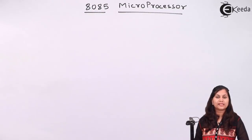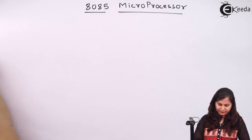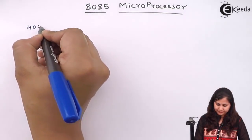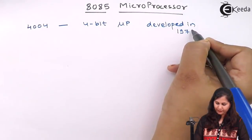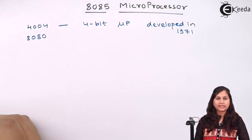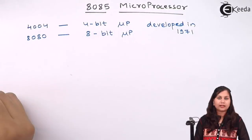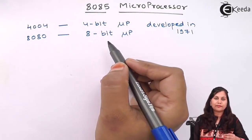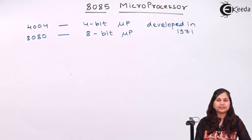The first microprocessor developed was the 4004, and it is a 4-bit microprocessor. It was developed in 1971. After that, the 8080 microprocessor was developed. It was an 8-bit microprocessor, but this microprocessor had few instructions only and it could perform only certain operations.